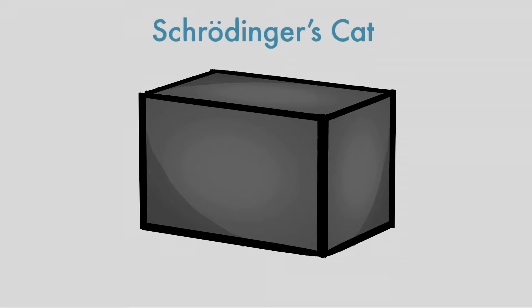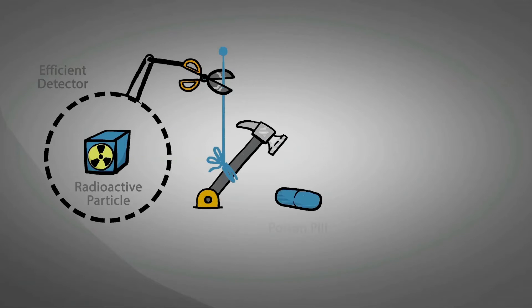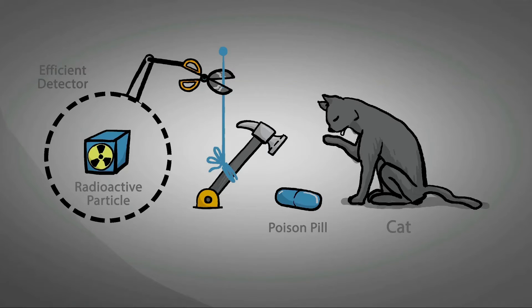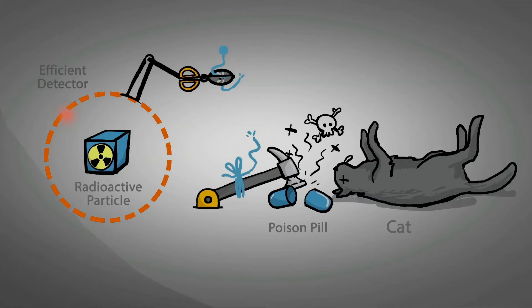The idea is we have a box, and inside this box we put an apparatus consisting of a radioactive particle, along with an efficient detector to detect whether the particle decays. His example was that we have some mechanism such that if the particle decays — and we also put a cat inside the box, that's the key — if the particle decays, it triggers some mechanism that releases poison and kills the cat. Not a very nice example if you're cat-friendly, but that was his way of explaining his discomfort with the quantum mechanical equations.